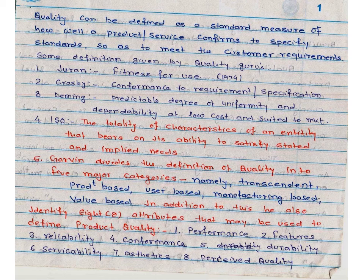Various quality groups define quality with their own words. Quality can be defined as a standard measure of how well a product or service conforms to specified standards so as to meet customer requirements. Some definitions given by quality gurus: Juran — fitness for use; Crosby — conformance to requirement or specifications; Deming — predictable degree of uniformity and dependability at low cost and suited to market.